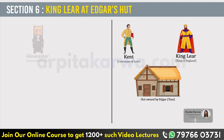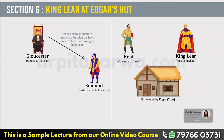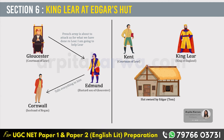On the other hand, Gloucester tells his bastard son Edmund that he has received a letter from France that an attack is about to happen in England, and that he must go and help King Lear. Edmund betrays his father and goes and gives this information to Cornwall, Regan's husband, and they start plotting for King Lear's death.